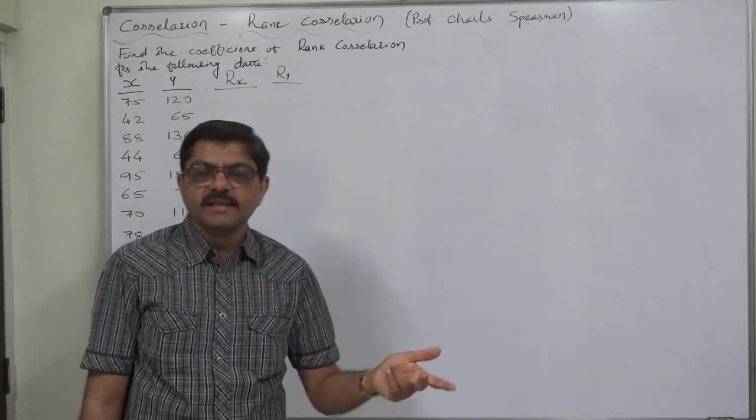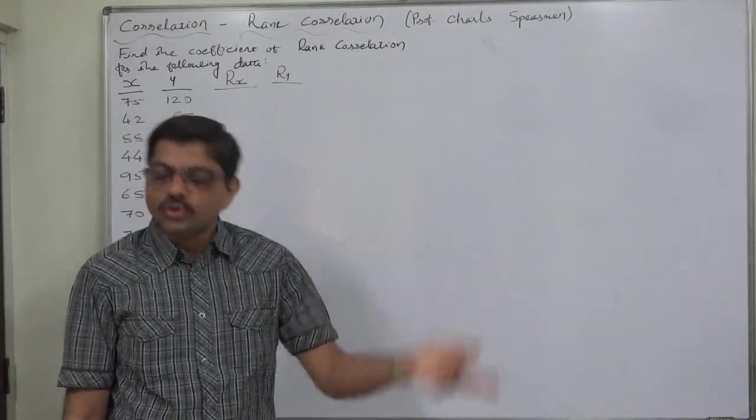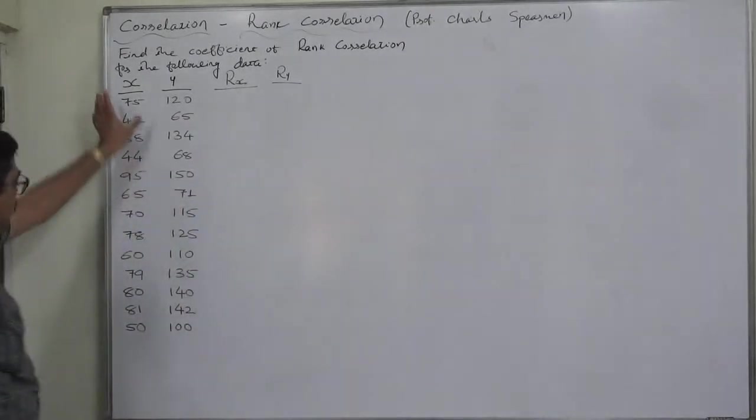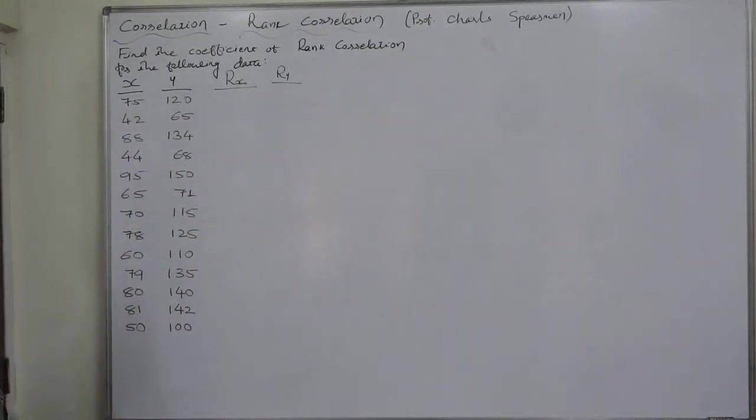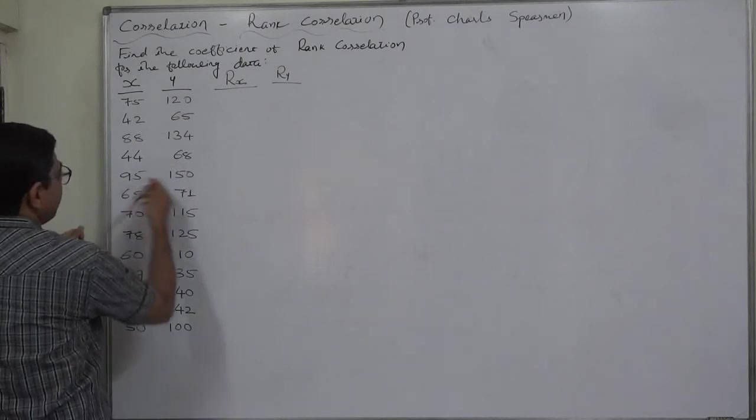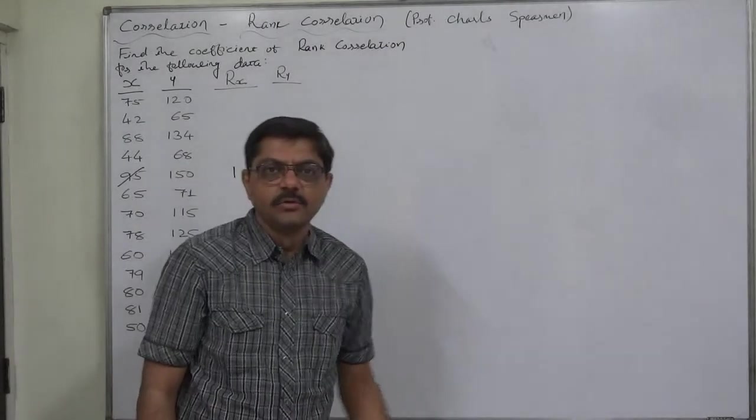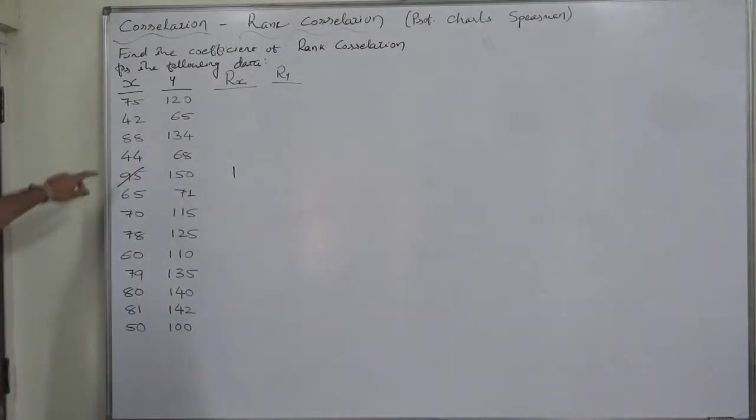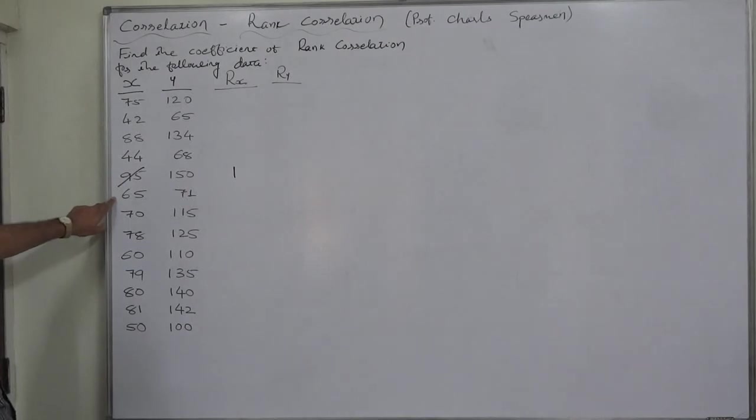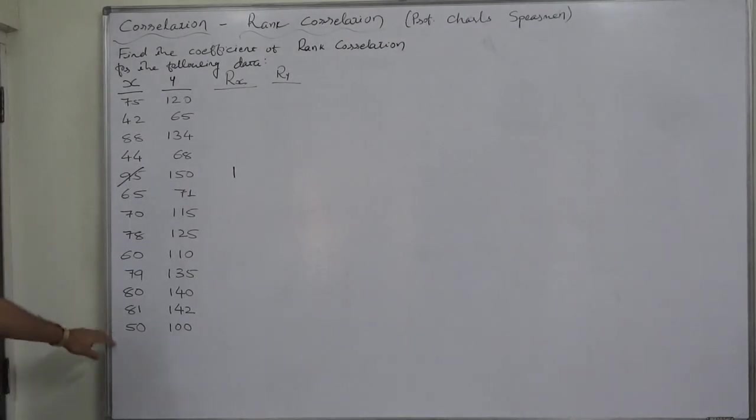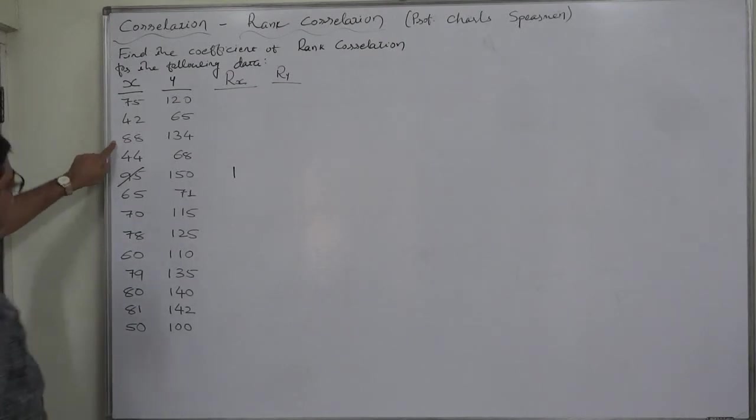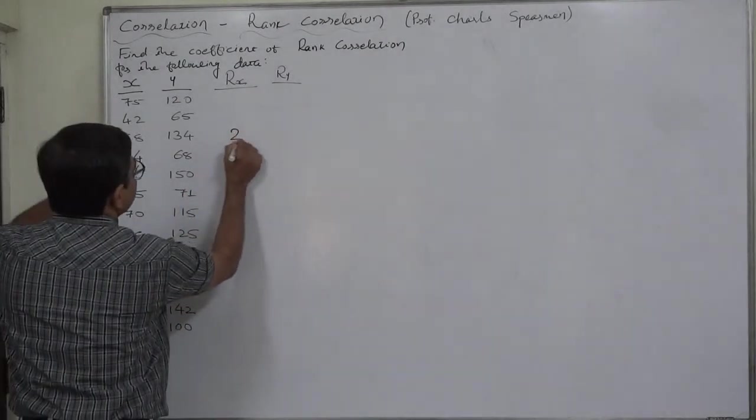The next highest value will be assigned rank 2 and so on. In case of x, which is the highest value? It is 95. 95 is the highest value. So, it will be assigned rank 1. There is no other value in 90s. So, in 80s, I think 88 is the second highest value. Yes, 88 is the second. So, it will be assigned rank 2.